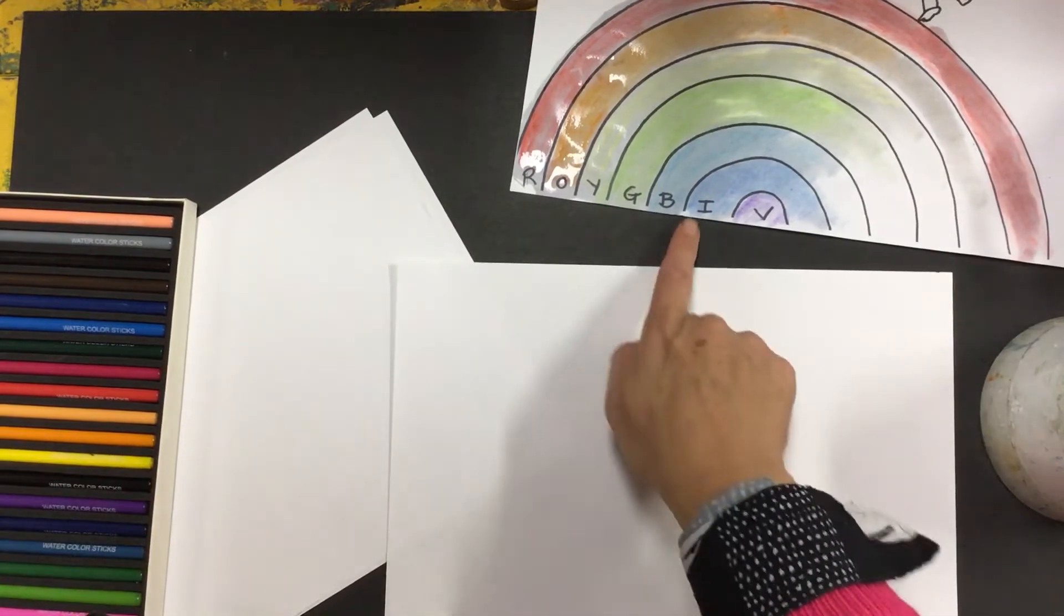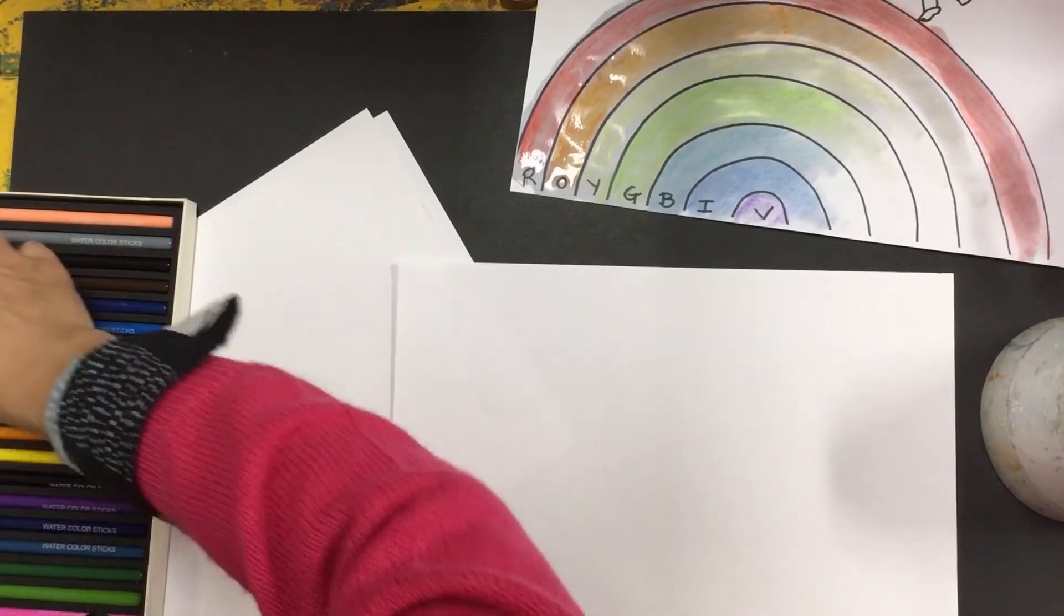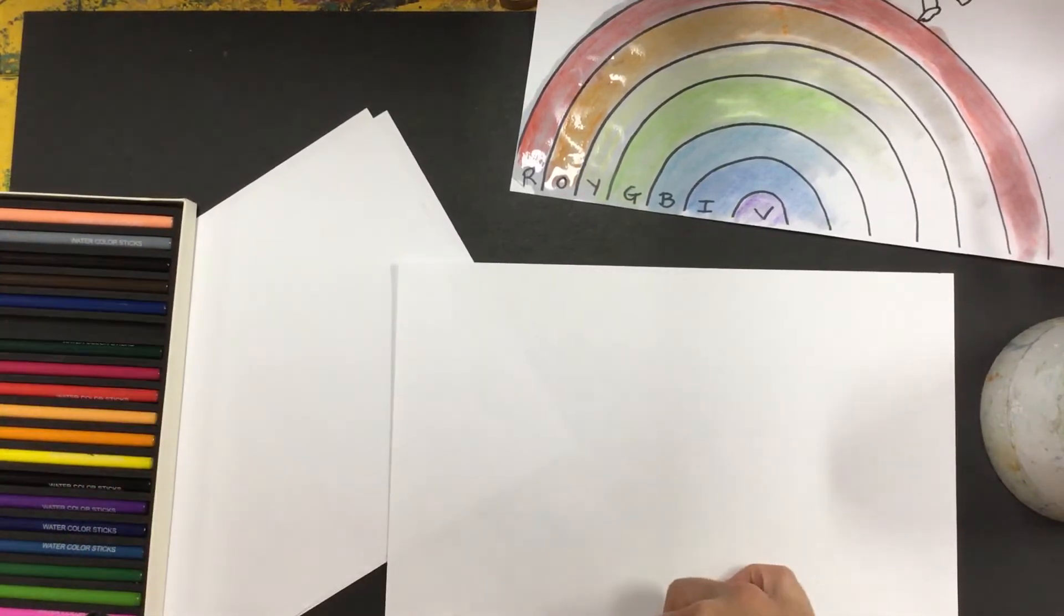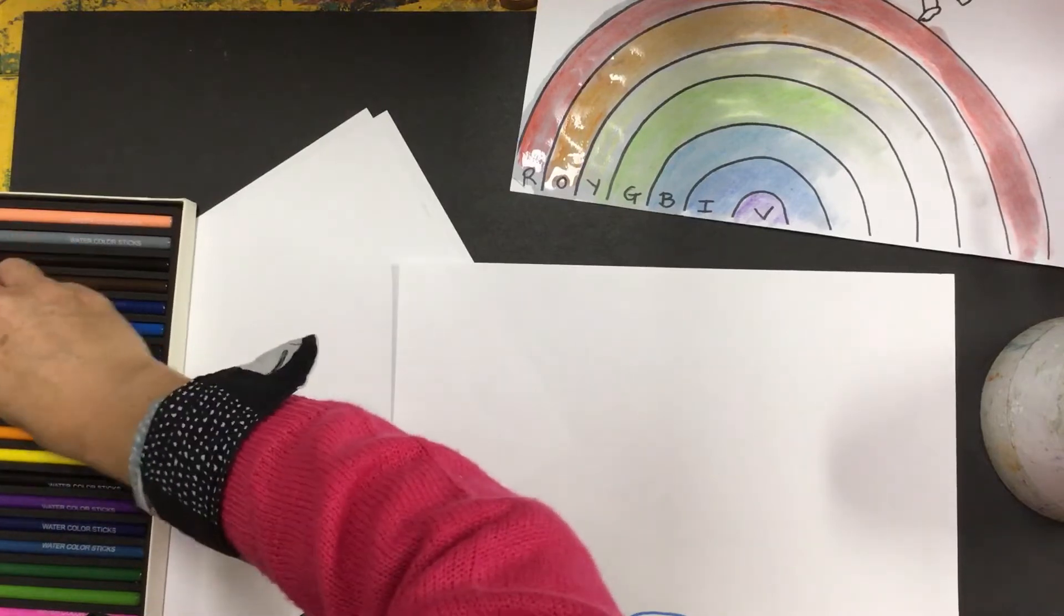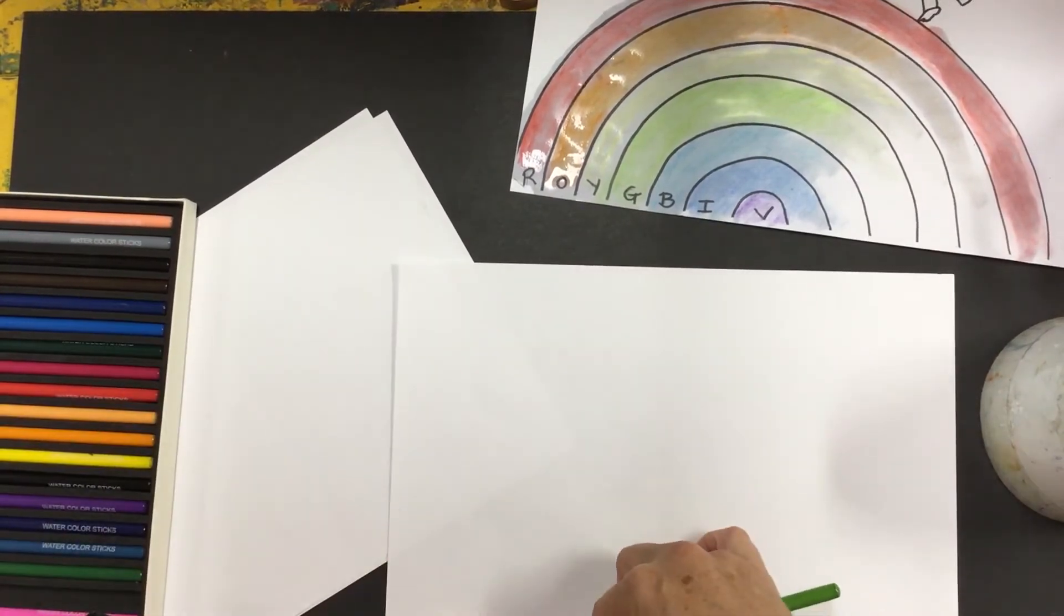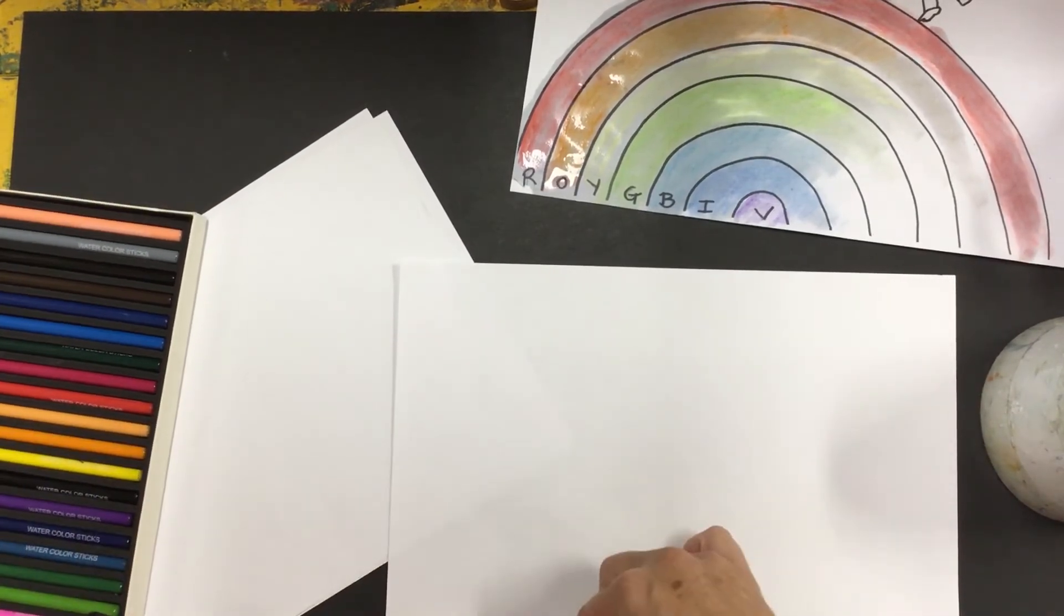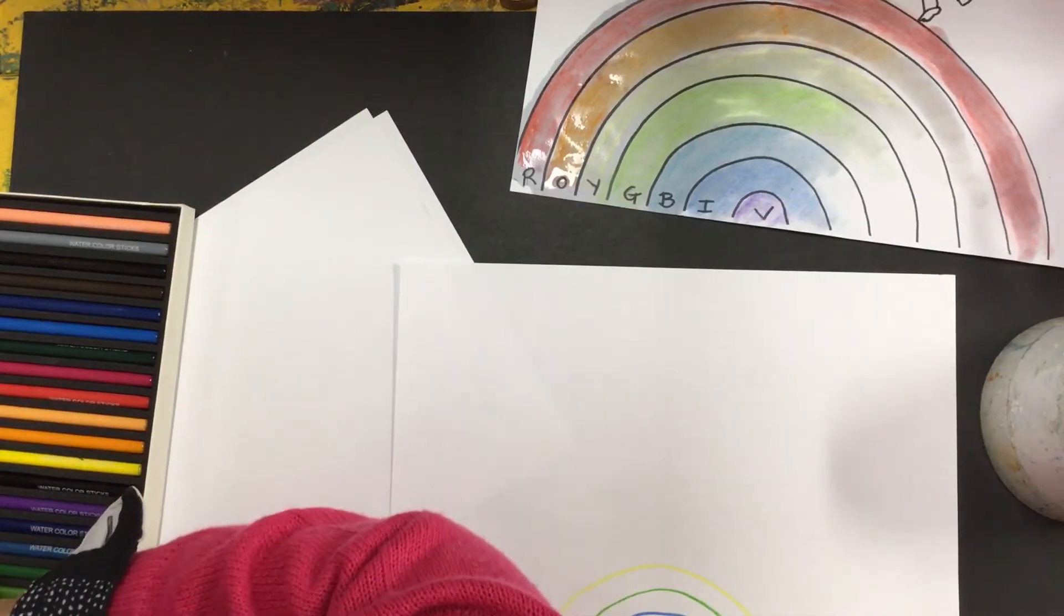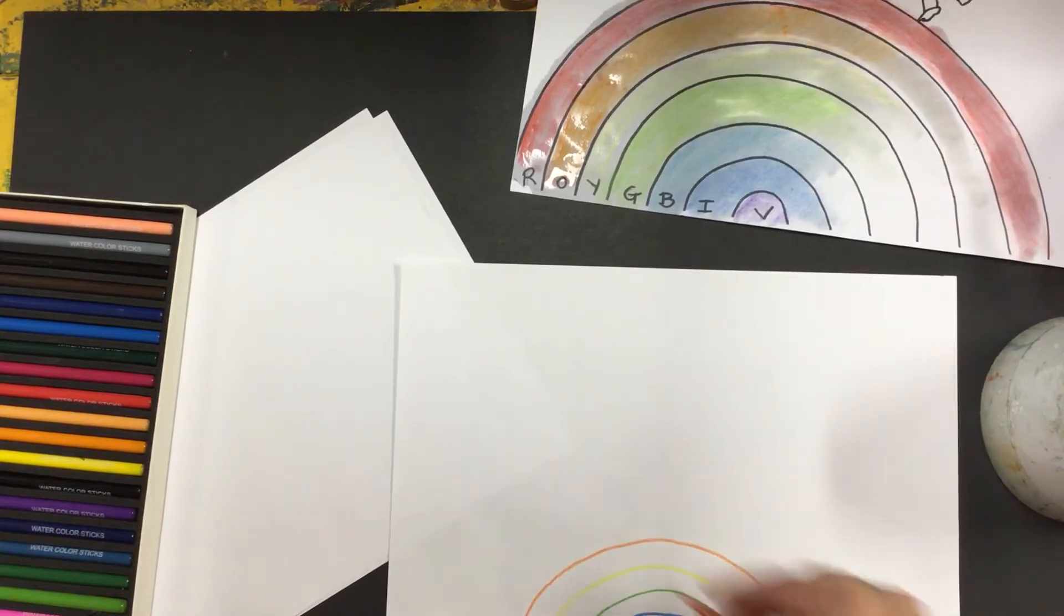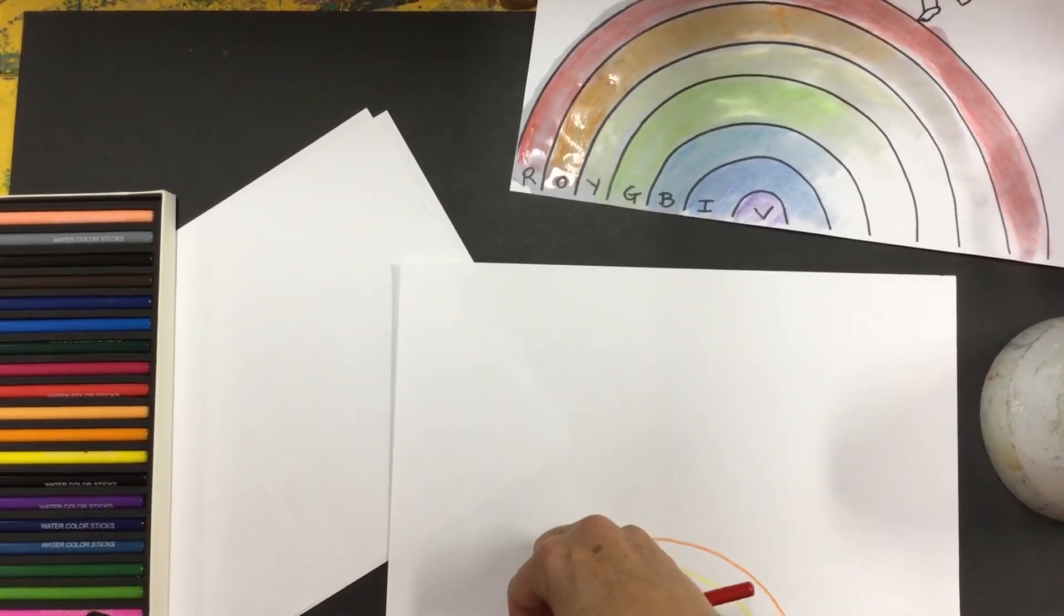Violet. What comes next? Indigo, which is dark blue. Light blue. Green. Yellow. Yellow is always the hardest color to see. Orange. And red.